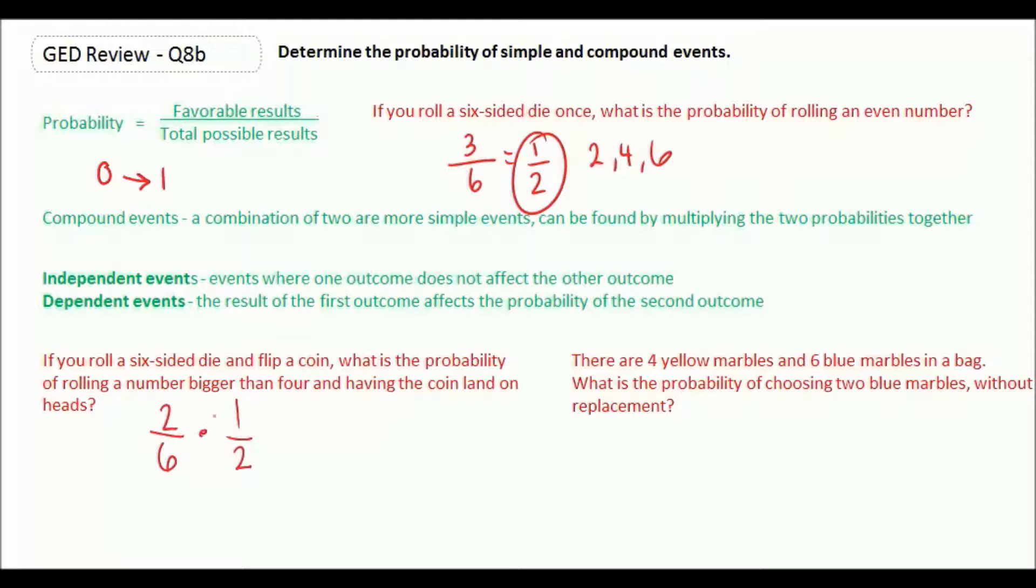So we have two sixths times one half. We're going to multiply those together. We can either simplify now or simplify later, but let's multiply and we get two over twelve. And then we can simplify that to one over six. And that is the probability of rolling a number bigger than four and having the coin land on heads.